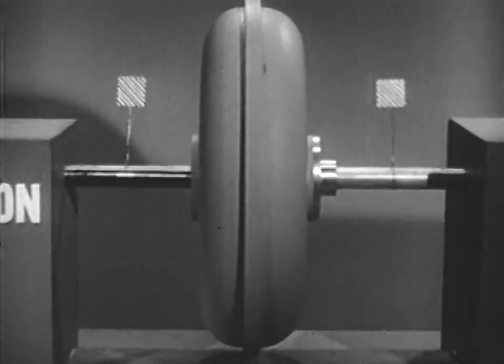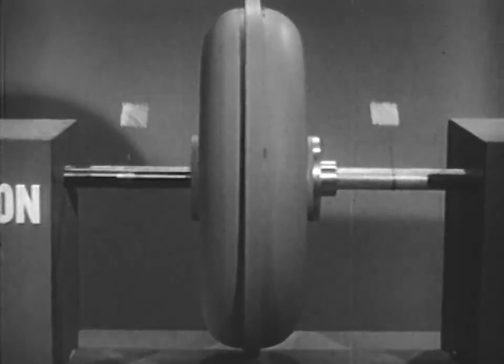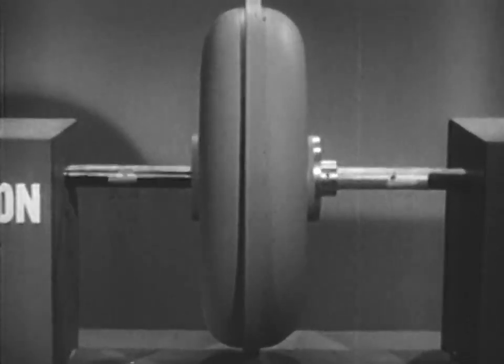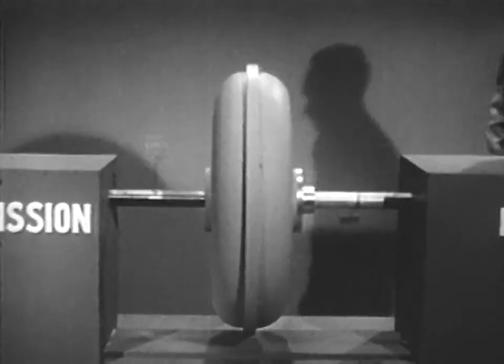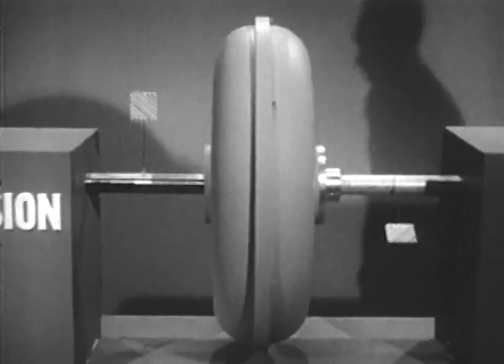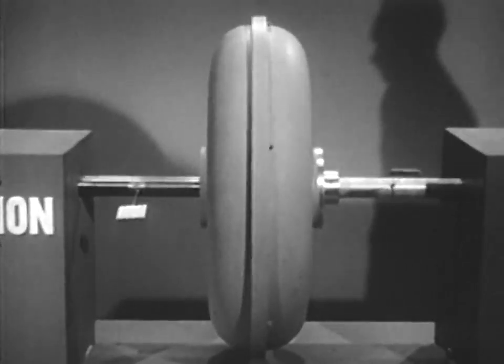It must be remembered that since the fluid coupling only replaces the conventional clutch, it is always used in conjunction with some type of transmission. Now that we know the parts of the fluid coupling and the way it operates, let's see it in action on a vehicle.